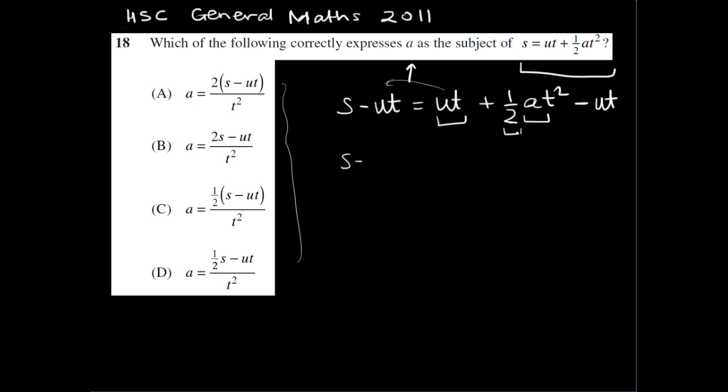So on the left-hand side, I have S minus ut. I can't simplify that any further. And on the right-hand side, the ut's cancel each other out because they're subtracting each other out, leaving me with half at squared.